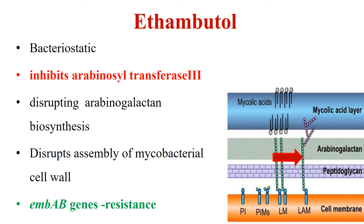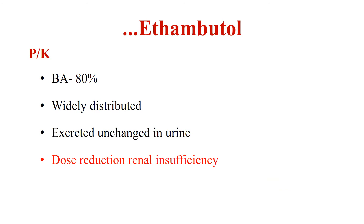Ethambutol is a bacteriostatic agent among the first-line anti-tubercular drugs. It acts by inhibiting arabinosyl transferase 3, which is essential for the biosynthesis of arabinogalactan, disrupting the assembly of mycobacterial cell wall. This arabinosyl transferase 3 is coded by the embAB gene, so any mutation in this gene leads to resistance against ethambutol. Its bioavailability is around 80% with wide distribution in the body. Less than half of the drug is metabolized, and the major route of excretion is through urine, so dose reduction is needed in patients with renal insufficiency.